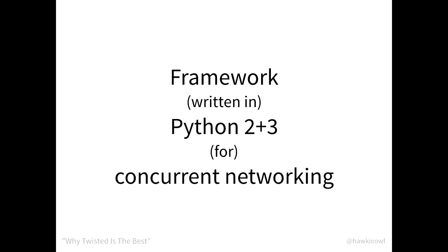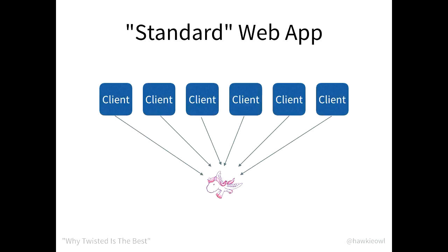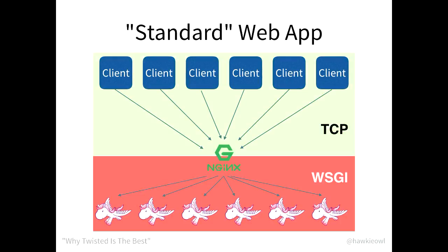So, what is concurrent networking, and how is it different from how we usually do things? Here's what your standard web app looks like. You have many clients and they go to your Django, for example. But it doesn't quite really work like this, because Django and Flask and all of those web frameworks only really process one request at a time. So what you do is have something like this, where all of the clients connect using TCP to Nginx, and then Nginx spins up and runs different instances of Django, which it sends a single response to at a time.